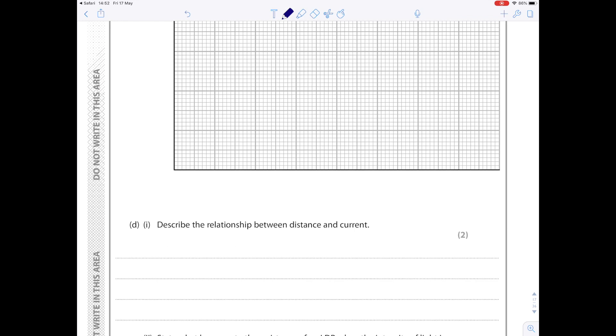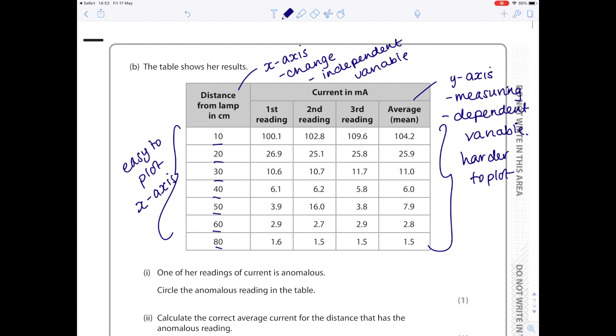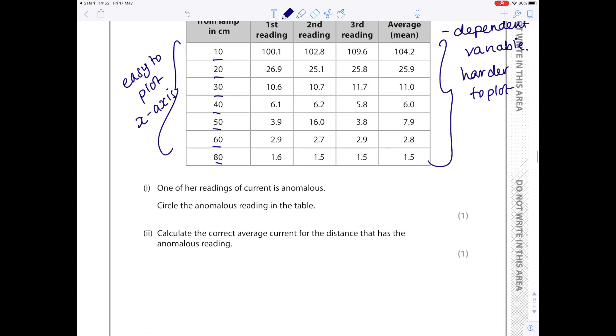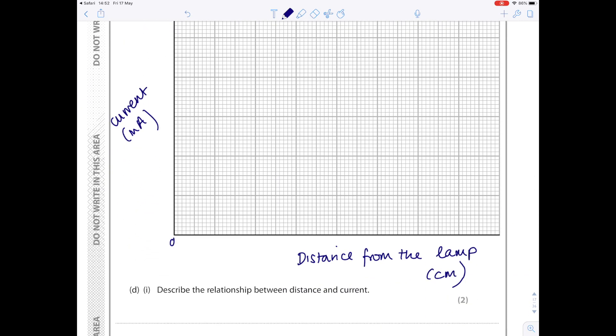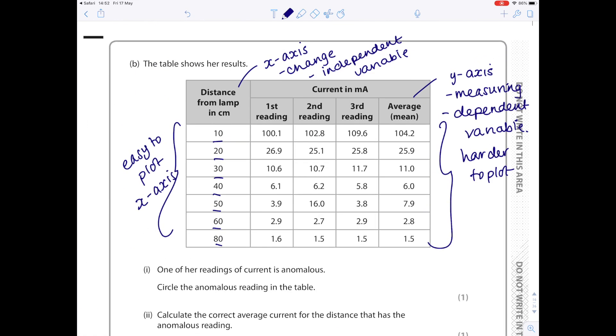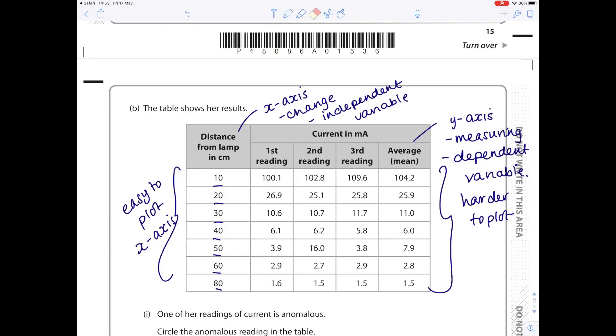So based on that, this will be the distance from the lamp. We need units in centimeters, and then the current in mA will be on our y-axis. Pick good scales so you want to occupy as much of that graph paper as possible. So I'm going to go up in tens along the x-axis. That fits really nicely. It's almost like they planned it. And then looking at the average mean, okay, so we have to go from 1 to 105, so that's going to be more difficult to plot. We're going to have to go up in 20s to make sure it fits the graph.